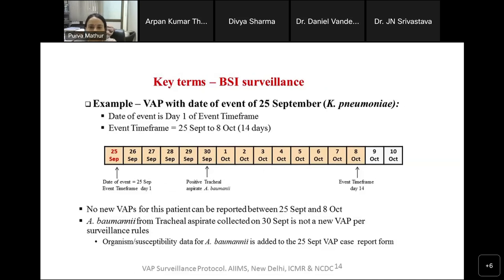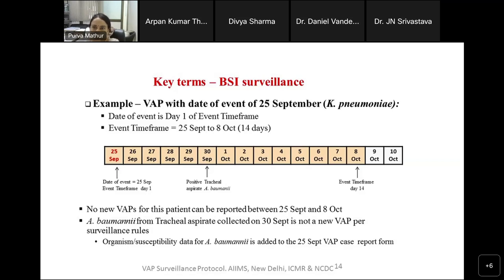Here is an example: a VAP with date of event 25th September due to Klebsiella pneumoniae. The event is ongoing for 14 days — from 25th September to 8th October. No new episode of VAP is to be reported during this period. If a tracheal aspirate grows Acinetobacter baumannii at 10^5 on 30th September, this is not to be reported as a new VAP — the organism should be reported in the same case report form as a new organism. It is one episode with multiple pathogens.